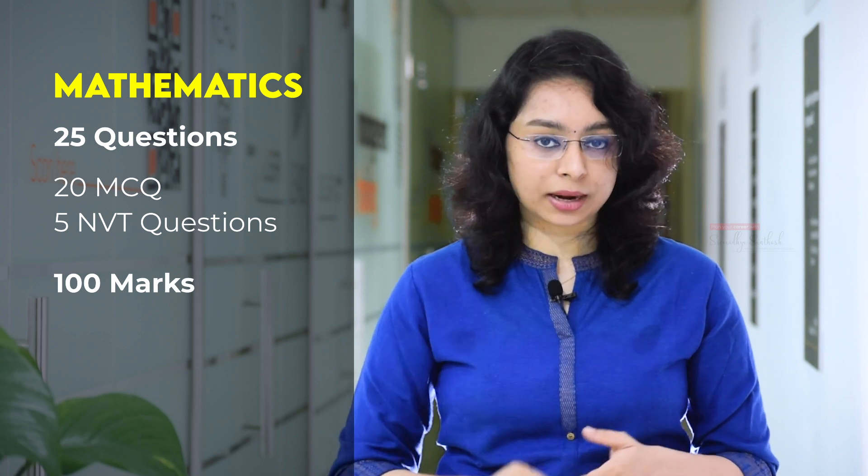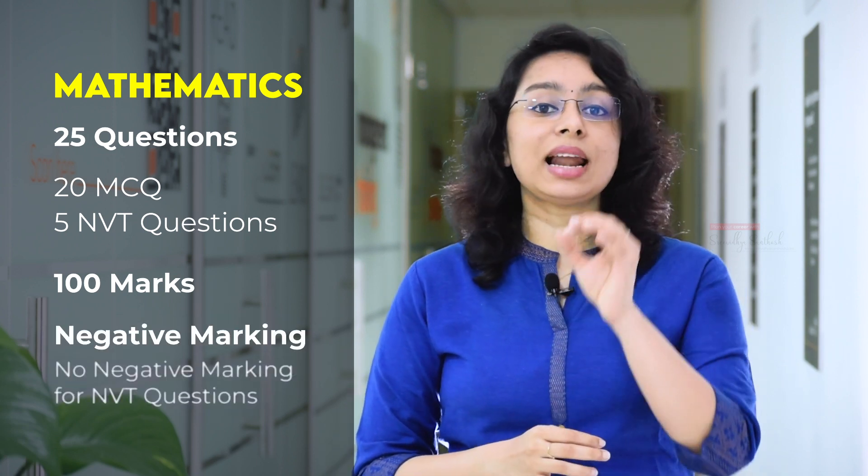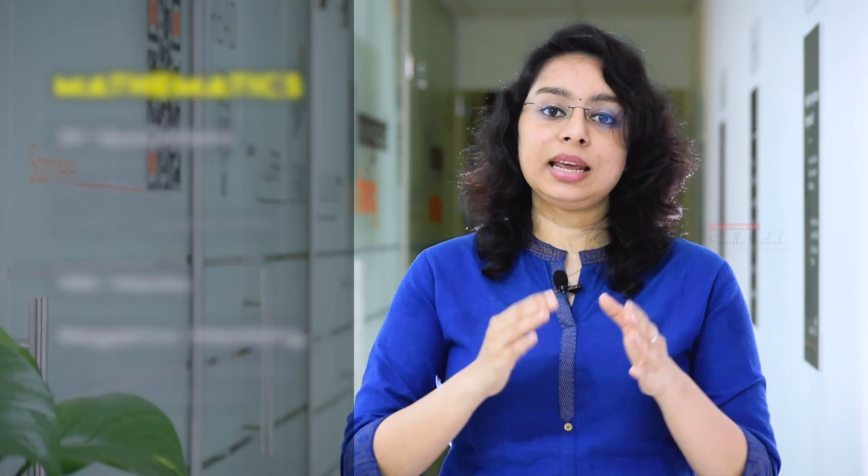The NVT (Numerical Value Type) questions are fill-in-the-blank style with no options — you enter a numerical answer. There are 25 MCQ questions with 4 marks each. The aptitude section contains mainly architecture-related questions. The drawing section requires two questions and has no MCQ format.